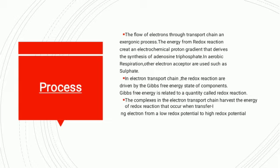Gibbs free energy is related to the quantity called redox potential. Complexes in the electron transfer chain harvest the energy of redox reactions that occur when they transfer one electron from a low redox potential to a high redox potential.